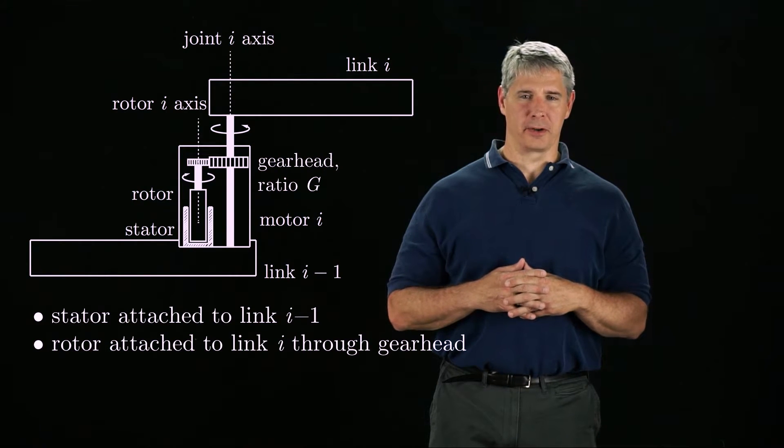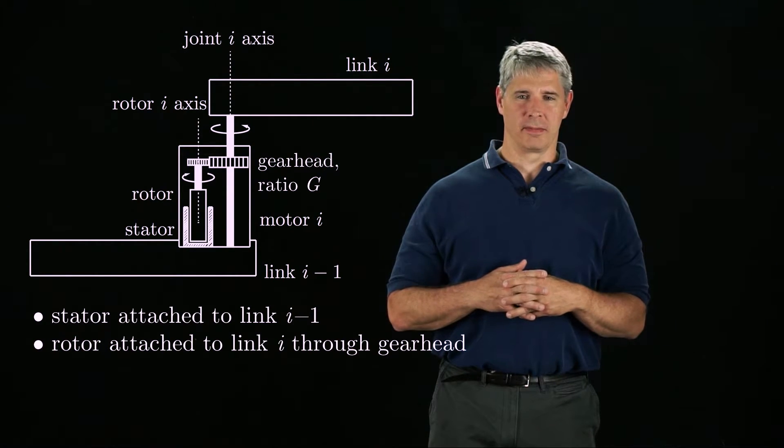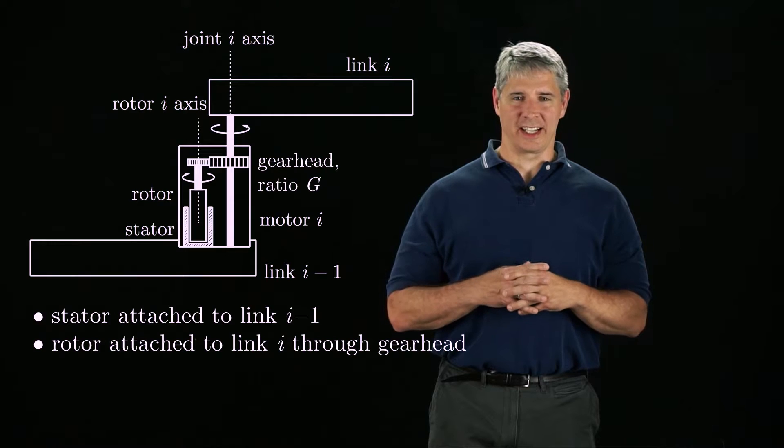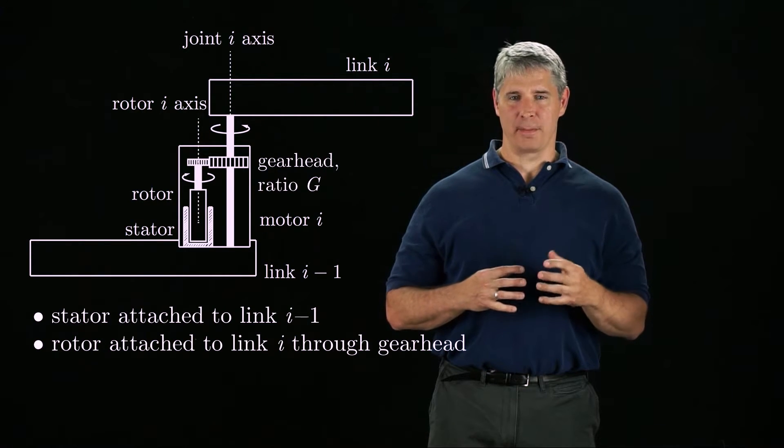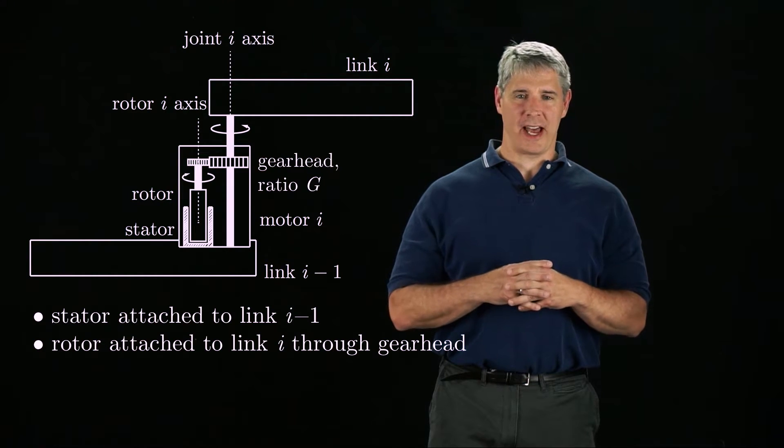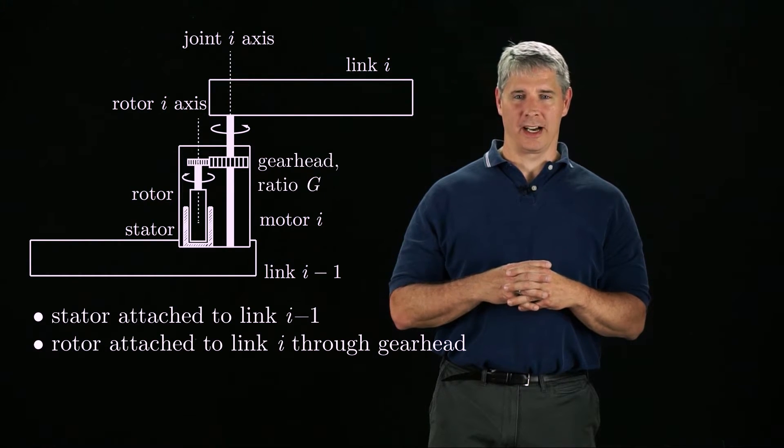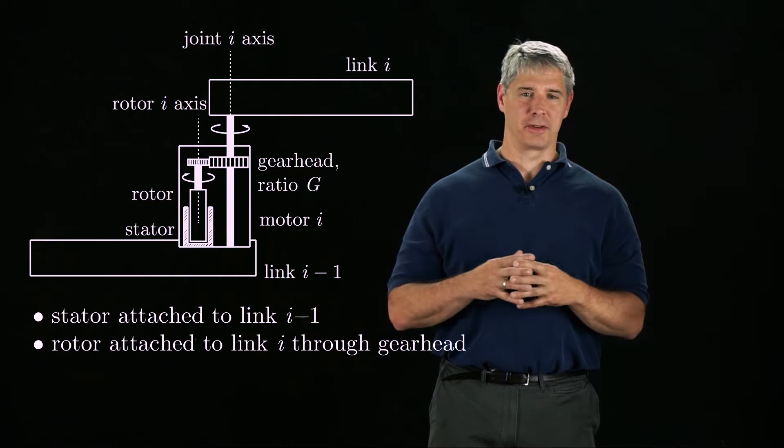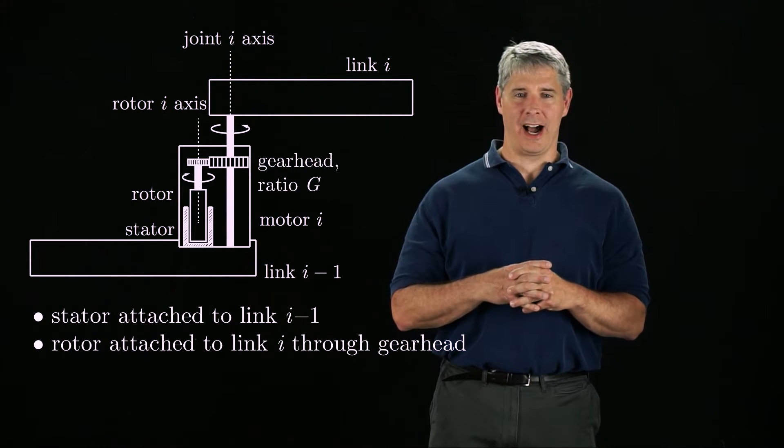This figure shows how a geared motor is typically used in a robot joint. The stator is attached to link i-1, and the gear head output shaft is attached to link i. The mass and inertia of the stator should be counted as part of link i-1, while the mass and inertia of the rotor should be counted as part of link i.